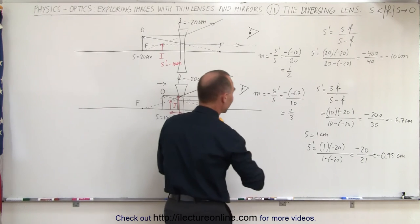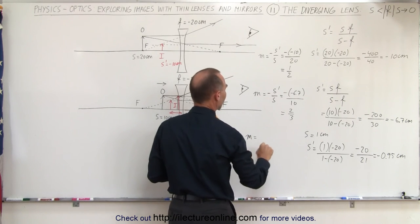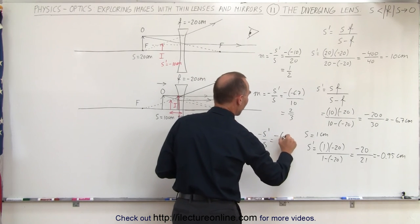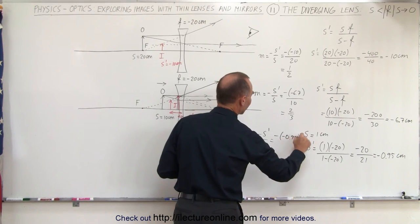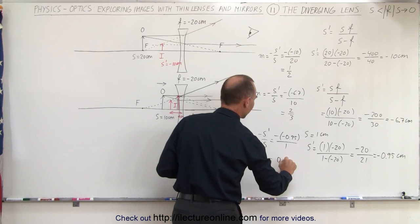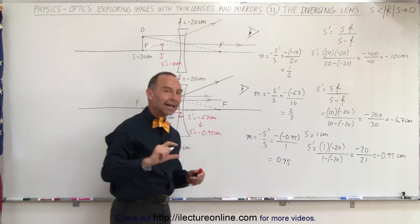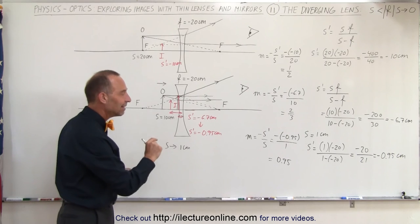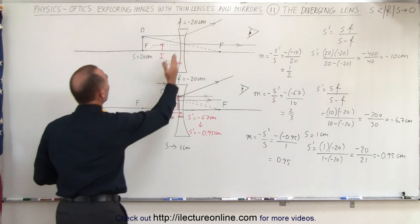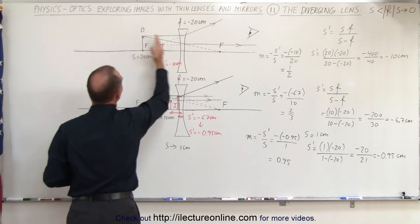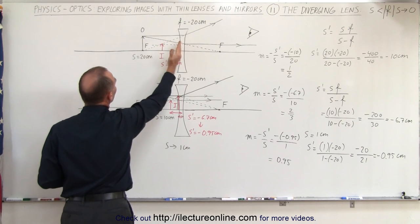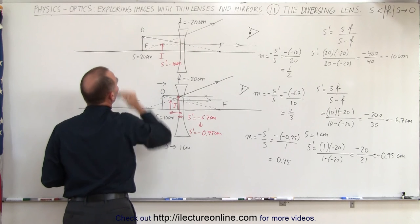Let's check what the magnification is in this case. The magnification is equal to minus S prime over S, which is minus minus 0.95 centimeters divided by 1 centimeter, equal to 0.95. In other words, the height of the image is 95 percent the height of the object. So no matter where we place the object in front of the diverging lens, the image will always be virtual, always in front of the lens, and always somewhere between the lens and the focal point.